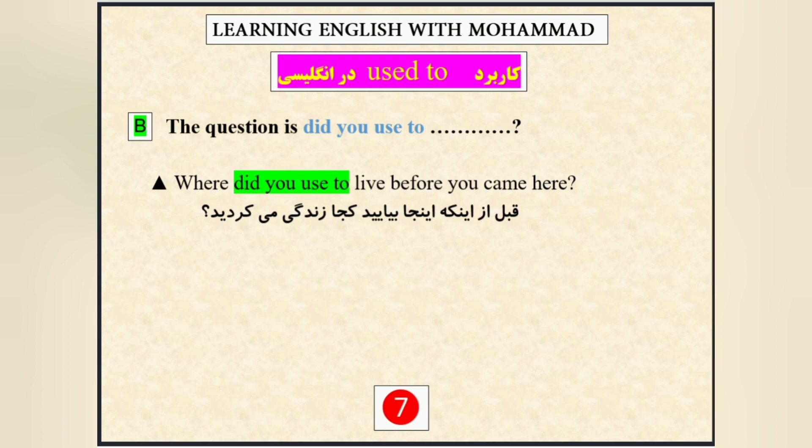و اما سوال کردن — دقت کنید. Did you used to — از did استفاده می‌کنیم، و شکل ساده‌ی use. Where did you used to live before you came here? قبل از این که اینجا بیاید، کجا زندگی می‌کردید؟ پس did you used to — بعدش هم شکل ساده‌ی فعل میاد.